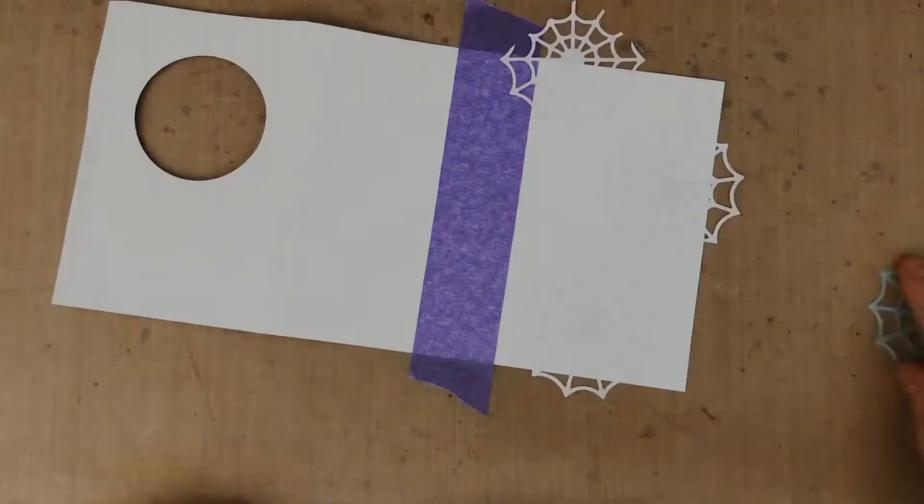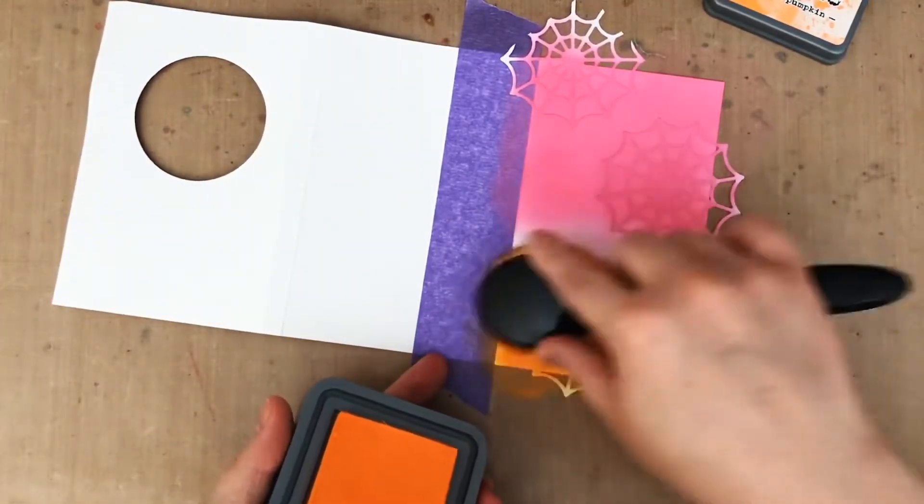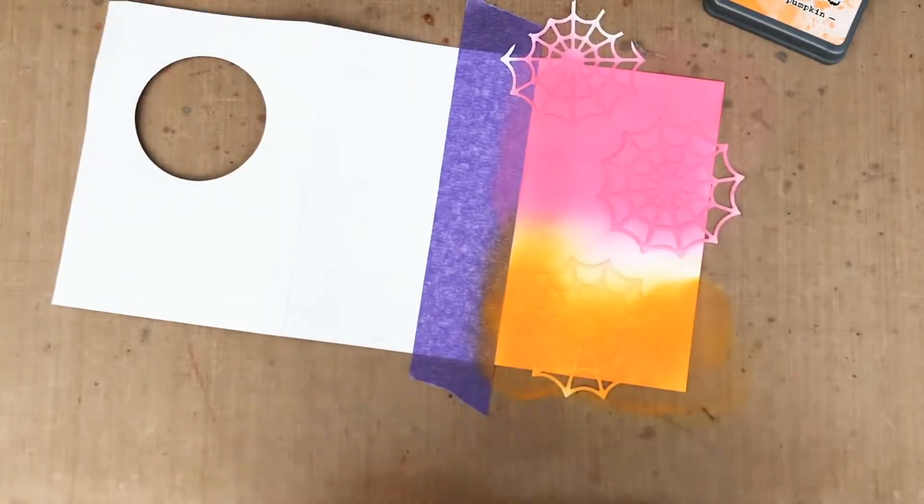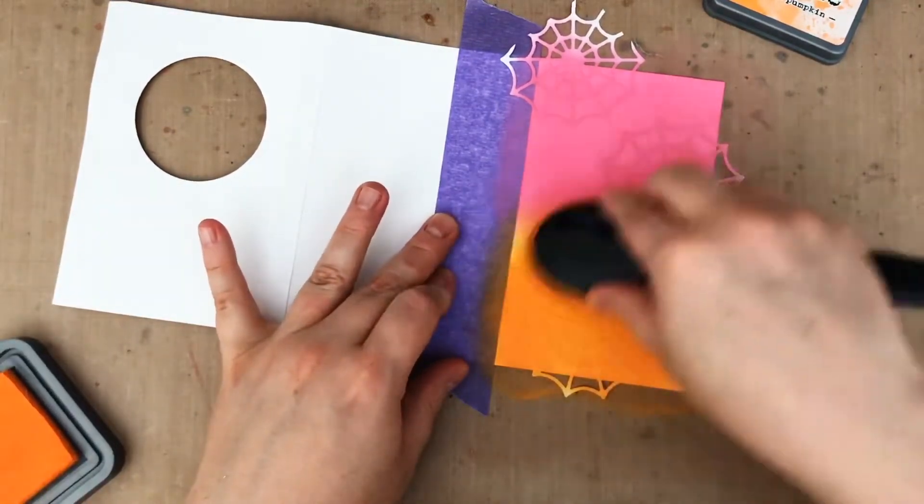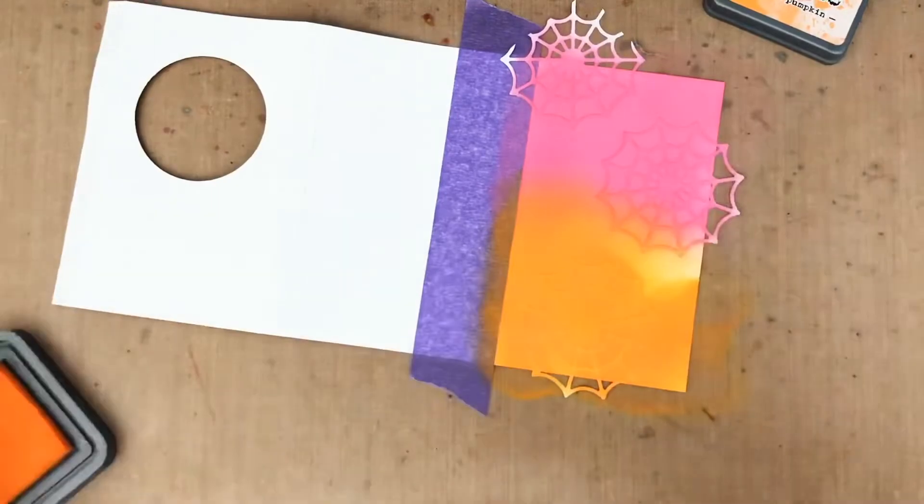And then when I do add ink, I am using Distress Oxide Picked Raspberry and Carved Pumpkin, just because I love orange and pink together for Halloween, plus I feel like it's happy and cheerful and sweet and not scary and dark. Because you know, Halloween is all about the treats for me, guys. It's all about the happy sugar, not any of the dark stuff.